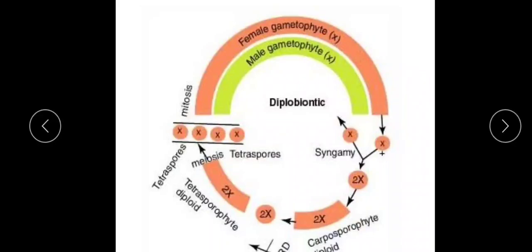In the life cycle, we have an independent multicellular gametophyte — both female and male — which are haploid, hence named gametophytes. These gametophytes produce gametes, which fuse to produce a diploid zygote. This diploid zygote undergoes mitosis to produce a multicellular, filamentous, branched structure that is not independent but remains attached to the gametophyte — named the carposporophyte. This diploid carposporophyte produces carposporangia, inside which diploid spores are produced.